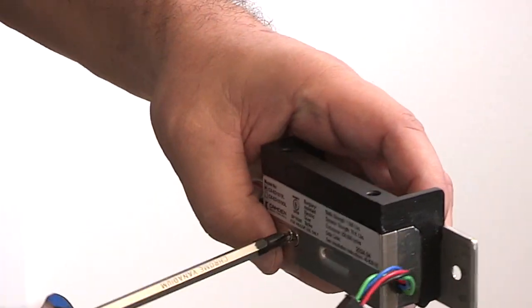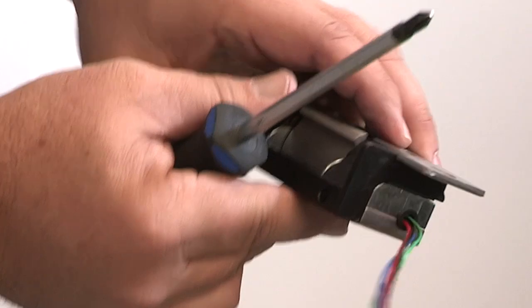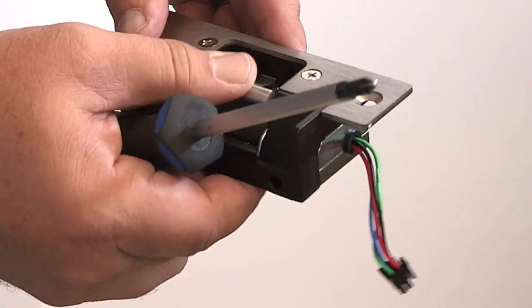To change it to fail-safe, use the two small set screws on the back. The keeper will now open as a fail-safe.